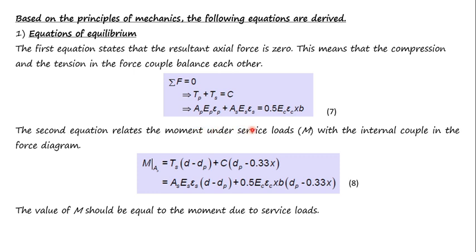The second equation relates the moment under service loads M to the internal couple: M = A_s·E_s·ε_s·(D_p − D) + C·(D_p − 0.33X) (Eq. 8). Substituting the expressions for T_s and C: M = A_s·E_s·ε_s·(D_p−d) + 0.5·E_c·ε_c·X·B·(D_p − 0.33X). The value of M must equal the moment due to service loads including dead loads.